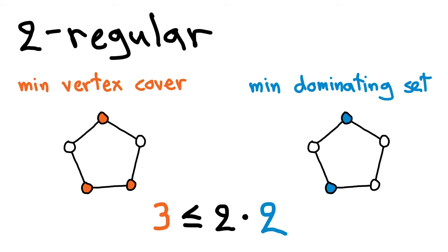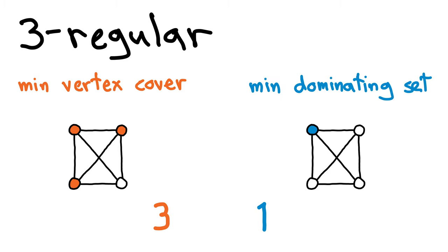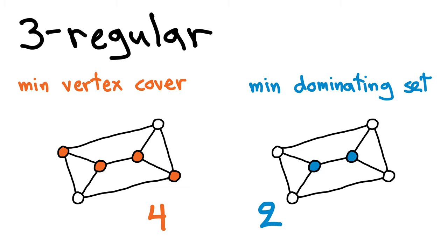Another example of d equals 2: another two-regular graph, a minimum vertex cover X with three nodes, and a minimum dominating set Y with two nodes. Again X is also a dominating set, and its size is at most two times the size of Y. Please note that here we are doing a bit better — the size of X is only 1.5 times the size of Y, but that's fine. And here d is three: a minimum vertex cover has three nodes, and a minimum dominating set has one node. The size of X is at most three times the size of Y, and X is also a dominating set. Another example: a minimum vertex cover with four nodes, a minimum dominating set with two nodes — factor 2 difference, which is at most three.